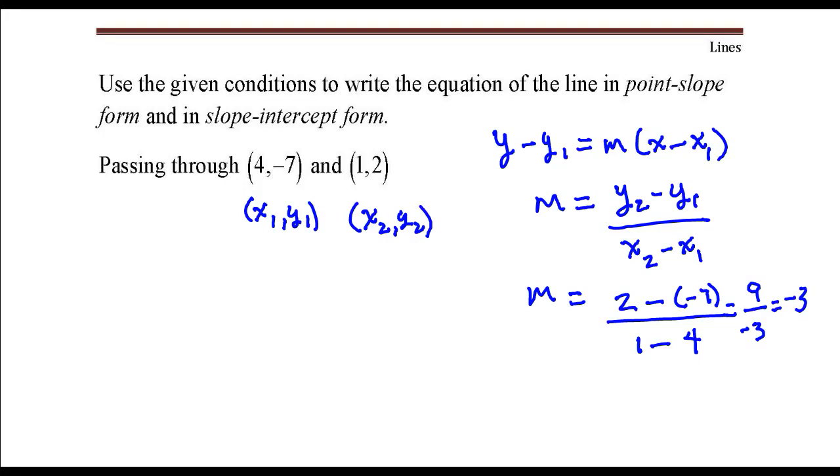Okay, so we have everything we need to write the equation of the line in point-slope form. So I'm just going to replace these values in this formula. y minus y1, that would be negative 7, is equal to the slope times x minus x1, that's 4.